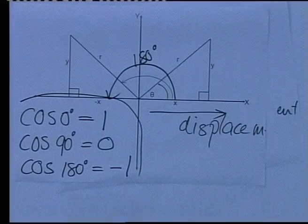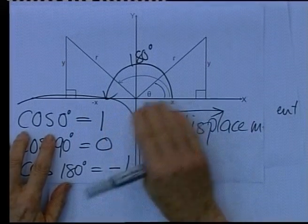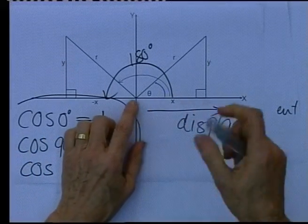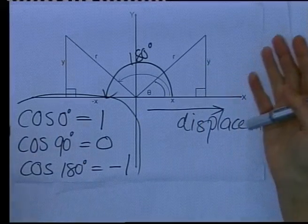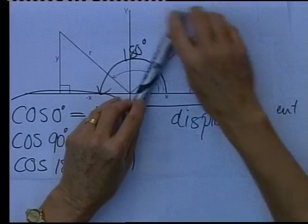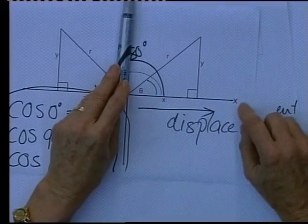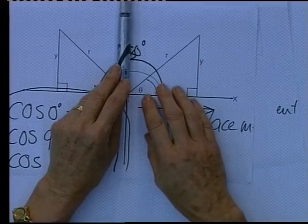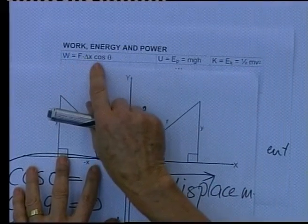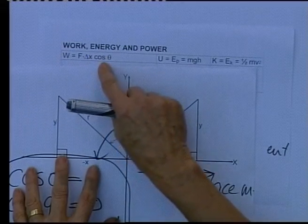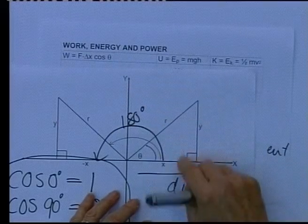This is extremely important because we will deal with these values very often. When the force and displacement are in the same direction, the angle between them is 0, so cos 0 equals 1. If you're working with a force that is perpendicular — like the normal force — then the work done by that force is 0, because in the equation W = F·Δx·cos theta, if cos theta is 0, the work done is 0. So the work done by the normal force is 0, because cos 90 equals 0.